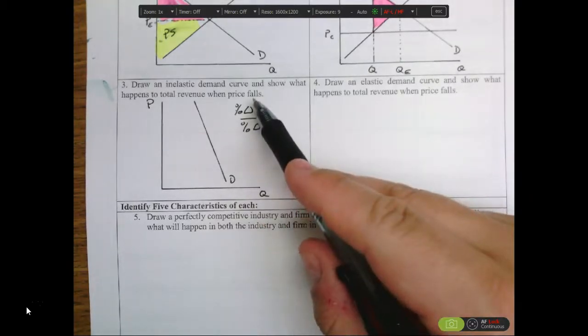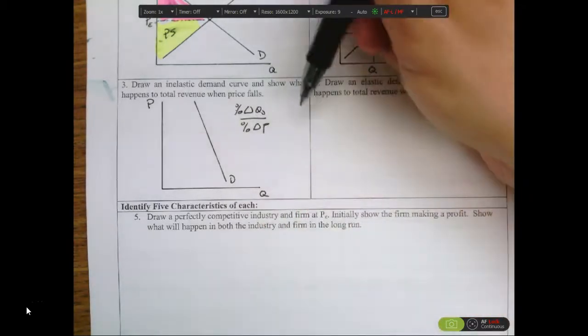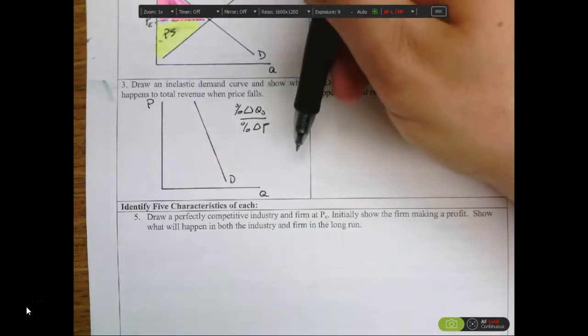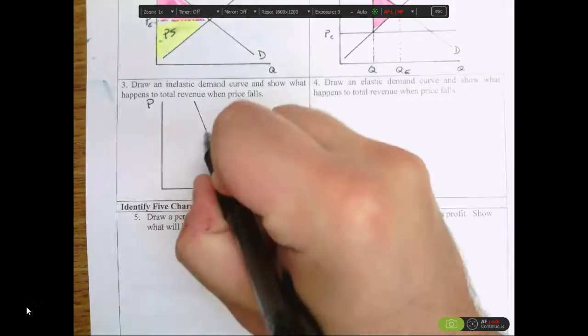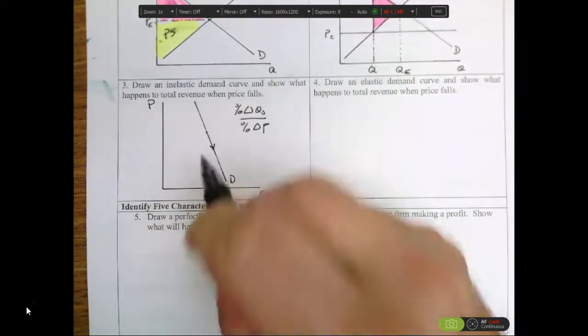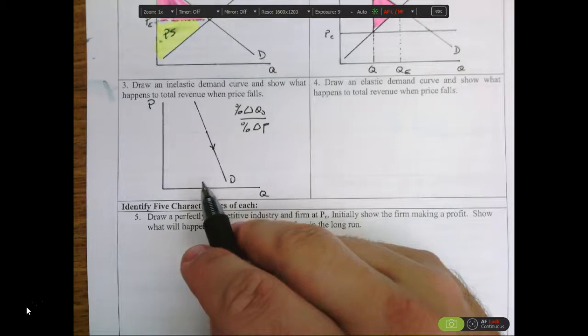In this case, it's asking what happens to total revenue when price falls. If price goes down, we're losing revenue because of the lower price, but we know that when we move from a point here to here, we're increasing the quantity demanded with a lowering of price.